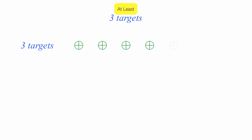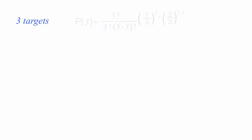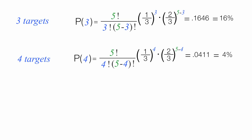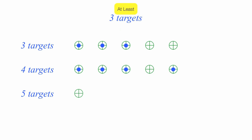What's the probability of hitting at least three targets? This is kind of a trick question, because you can hit three targets, four targets, or all five targets — which we just calculated. I need to add up the probabilities: hitting three targets is 16%, hitting four targets is 4%, and hitting five targets is 0.4%. Adding all these up gives about 20.4%. The probability of hitting at least three targets is about 20.4%.